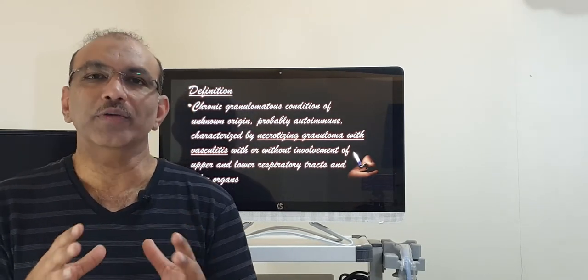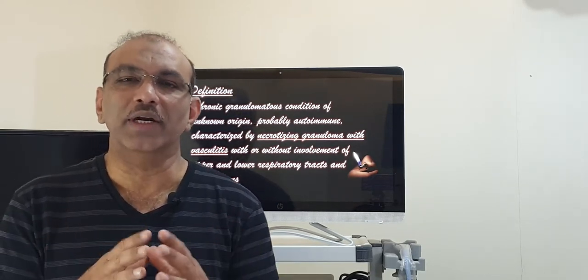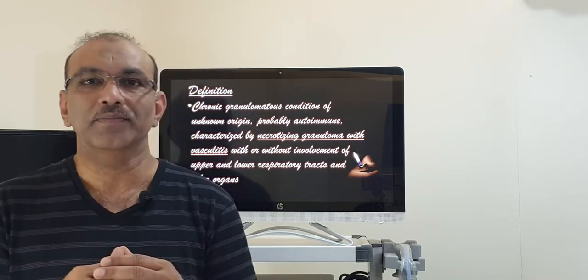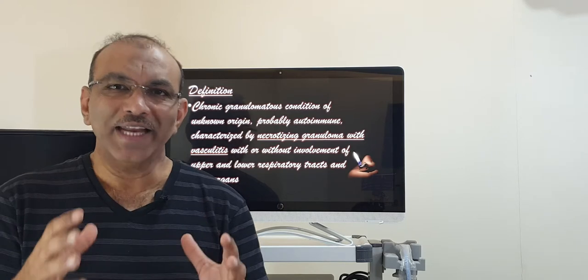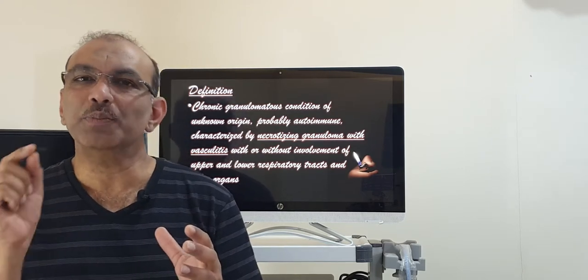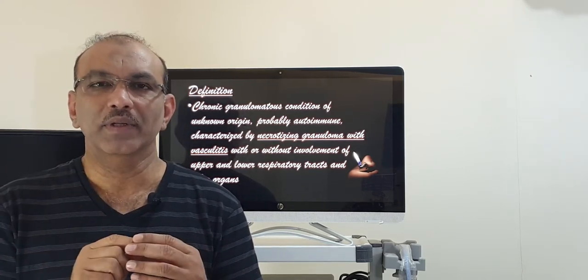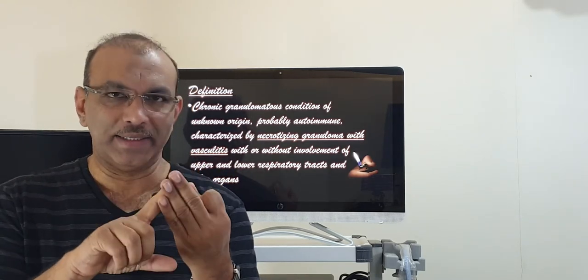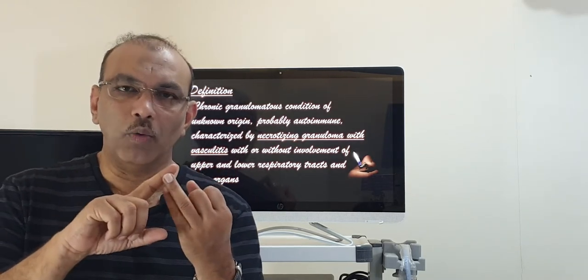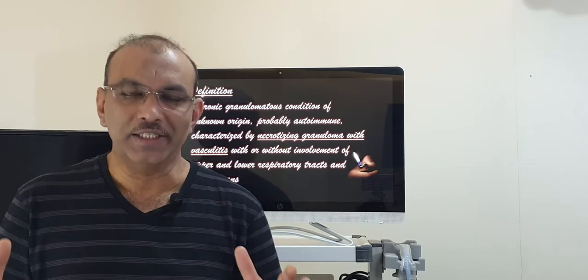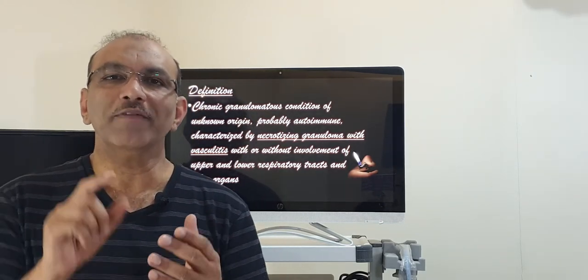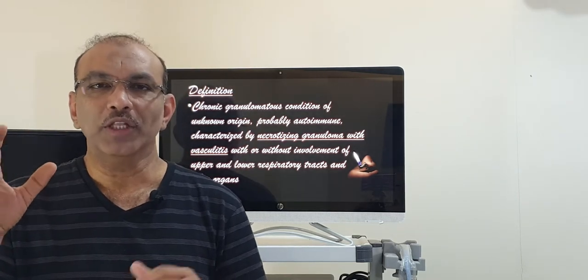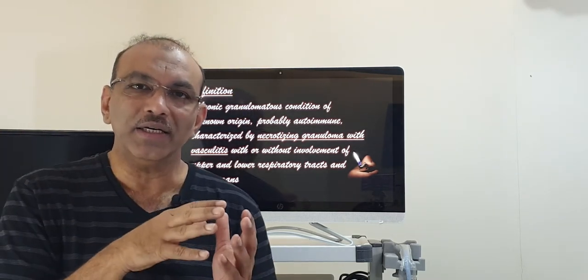So what the immune mechanism does is it starts producing antibodies after the first attack. These antibodies go against a specific cell in the blood. In the blood you have red blood cell, white blood cell and platelets. So in the white blood cell you have so many subgroups. In that you have something called neutrophils.